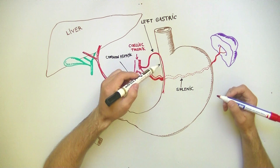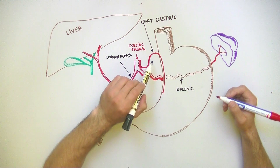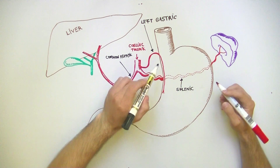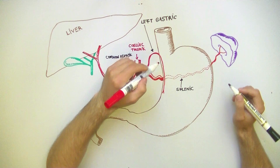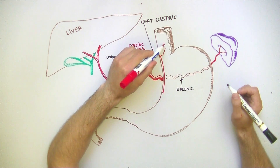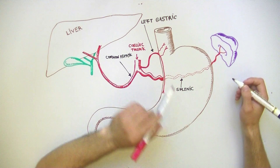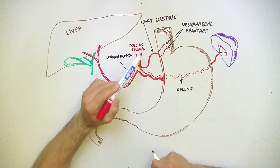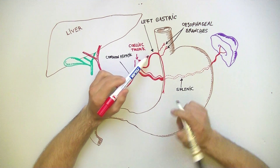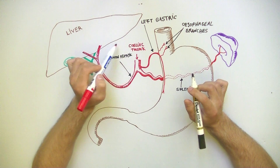But before reaching the lesser curvature of the stomach, as you can see, the left gastric artery describes a convexity oriented towards superior. From this convexity, the left gastric artery gives off esophageal branches, which supply the lower part of the esophagus. Sometimes, from the convexity of the left gastric artery can arise an accessory hepatic artery, which will supply the left lobe of the liver.